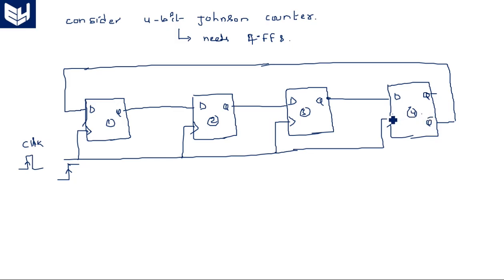A counter counts the number of clock pulses. A ring counter counts n number of clock pulses — a 4-bit ring counter counts 4 clock pulses, and an n-bit ring counter counts n clock pulses. But how many clock pulses can a 4-bit Johnson counter count? We will see this through the sequence table.